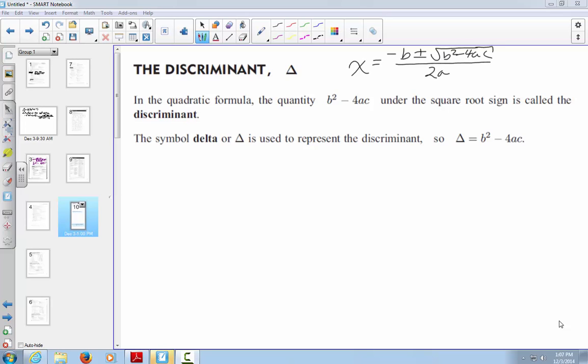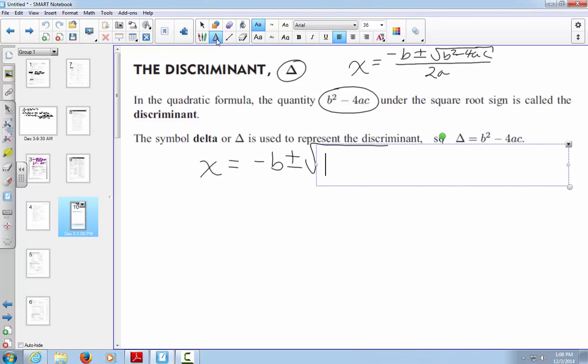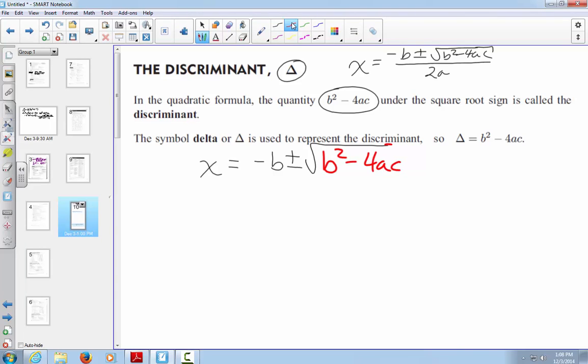What's happening now is we've got this thing that's part of the quadratic formula called the discriminant, also known as delta. The part of the quadratic formula that is b squared minus 4ac. So we have x equals negative b plus or minus square root b squared minus 4ac all over 2a.